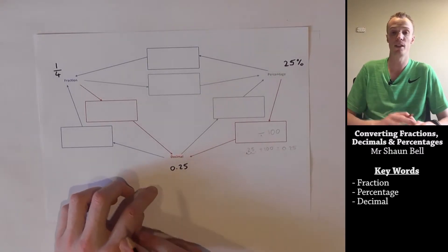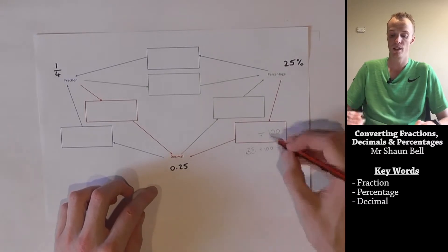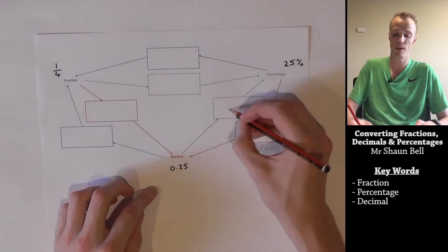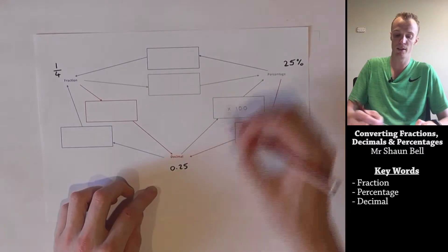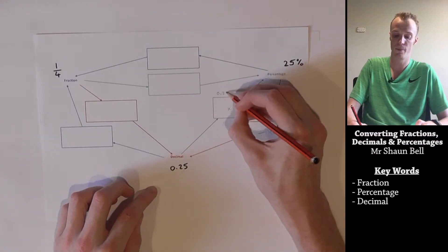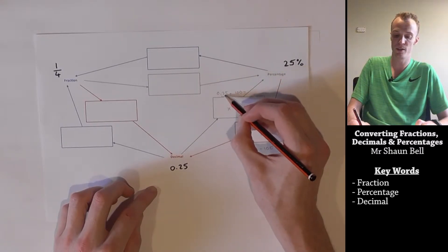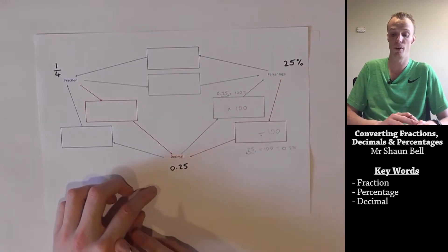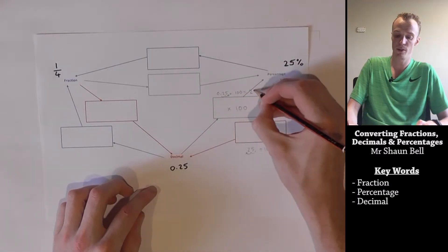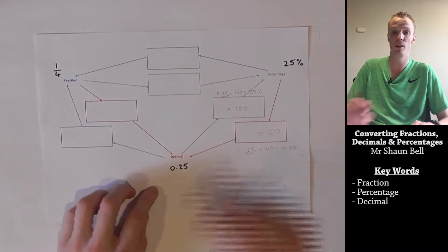To move from decimals to percentages, we need to do the opposite. So rather than divide by 100, we need to multiply by 100. If we take our 0.25 and multiply it by 100, we move this decimal place two spots to the right, which gets us back to our 25% value.